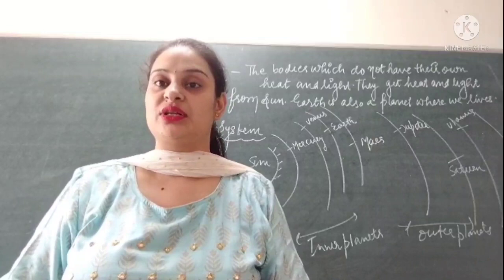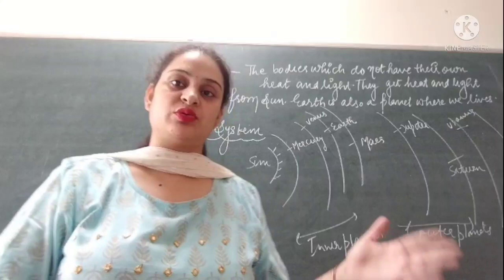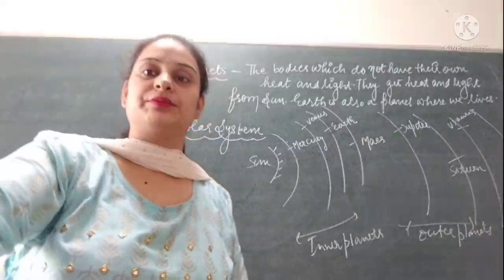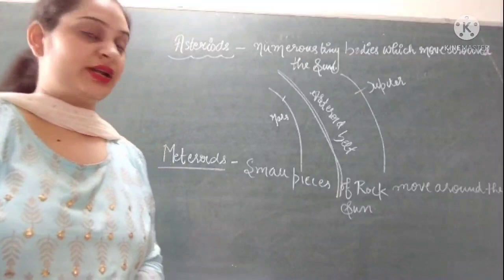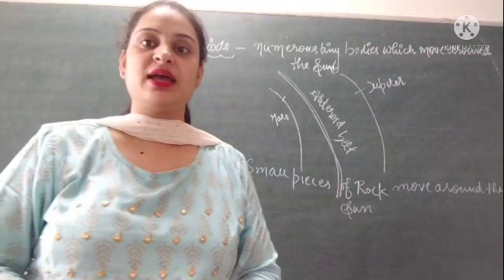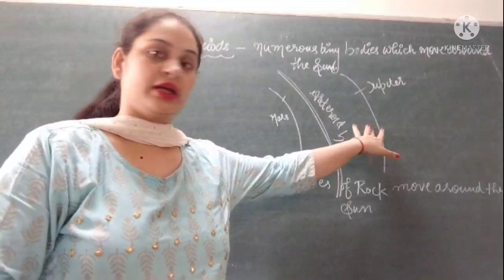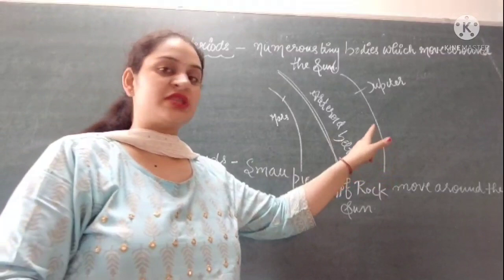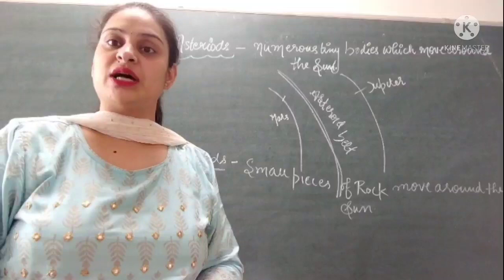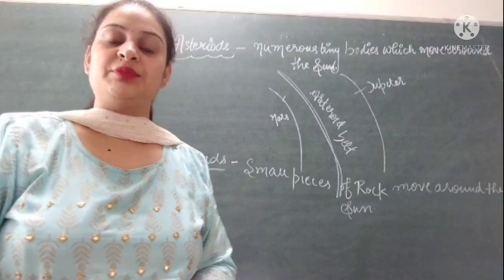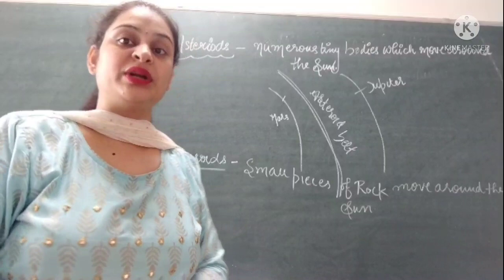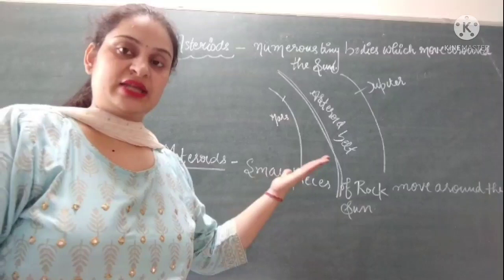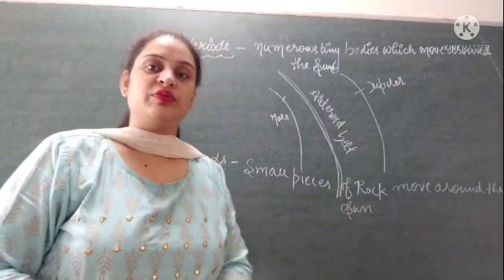Now we are going to discuss about asteroids and meteoroids, which are also part of the solar system. Asteroids are numerous tiny bodies which move around the sun, and they are found between the orbits of Mars and Jupiter. Some scientists believe that these asteroids are part of a planet which exploded many years ago — due to that explosion, these asteroids are found between the orbits of Mars and Jupiter.